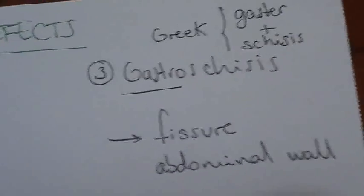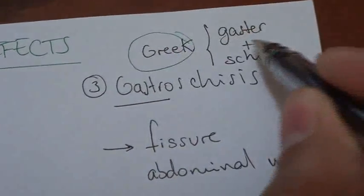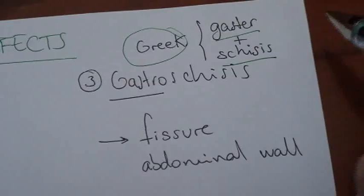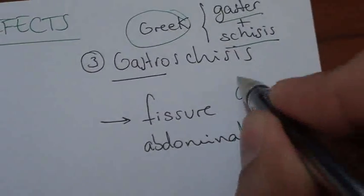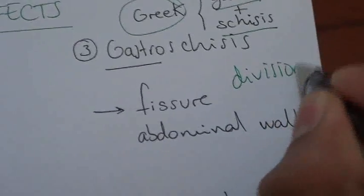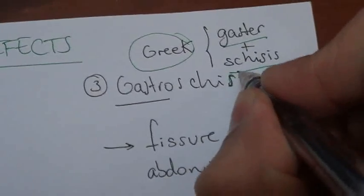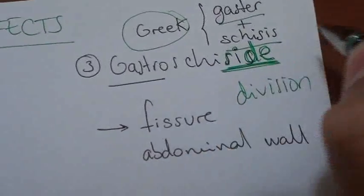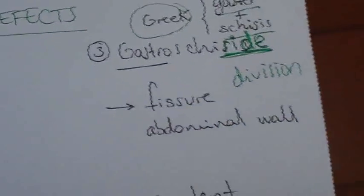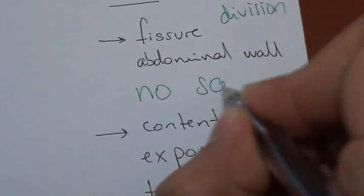And the last one is gastroschisis. Again, this word comes from the Greek, gastroschisis, which means division. In this case, it's a fissure, it's a division in the abdominal wall, but will be in the side. You see, gastroschisis will be in the side of the umbilicus. So what does it mean? That it's not covered by a sack. No sack.